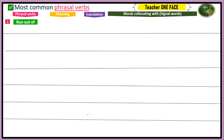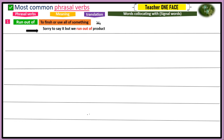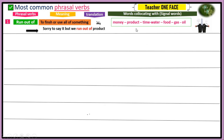First there is 'ran out.' Ran out means to finish or use all of something — when you have something that you finish or consume and don't have it anymore. For example: 'We ran out of product.' The collocating words you can see in this list include money, time, water, food, gas, and oil — all used with the verb 'run out.'